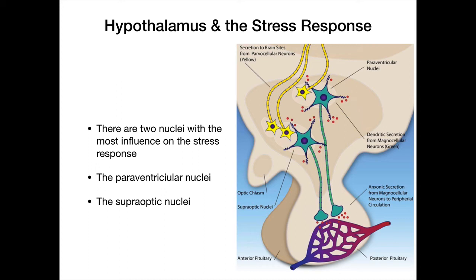Interestingly, CRH receptors have been found outside of the brain — notably in the digestive tract, skin, and cardiovascular tissues. The gut is profoundly influenced by stress, strongly implicated in irritable bowel syndrome and irritable bowel disease. Stress responses in the gut are heavily driven by these peripheral CRH receptors. Similarly, many stress-related skin conditions and cardiovascular effects are connected to CRH receptors outside the brain.